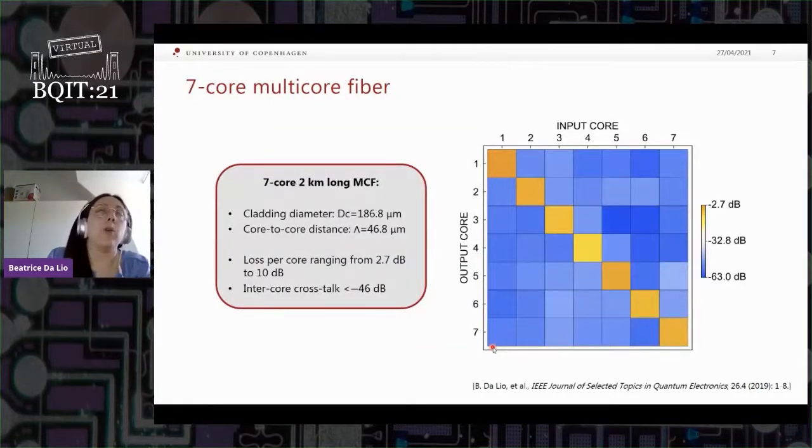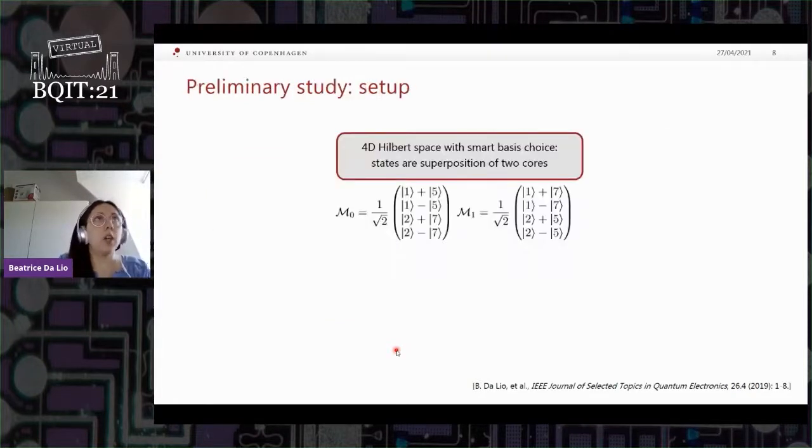The multicore fiber that we had available in our lab was a seven core multicore fiber two kilometer long. It has a very different loss per core ranging from 2.7 dB to 10. This is actually very high, but it's not due to the fiber itself but mostly to the fan in and fan out coupling devices to it. Another important thing for quantum communication is the crosstalk between the cores, so how much light is coupled from one core to the other. And this has to be as low as possible. And we measured it to be always for each couple of cores less than minus 46 dBs.